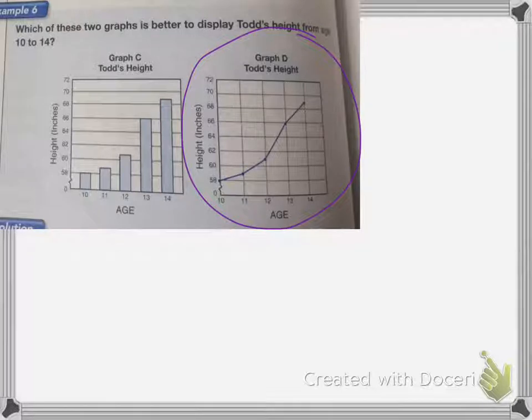On graph C, it makes it appear that Todd's height didn't change until his age changed. So it looks like he didn't grow until he turned 11. So when he turned 11, boom, he suddenly gained a bunch of inches. When he turned 12, the day he turned 12, he suddenly grew.